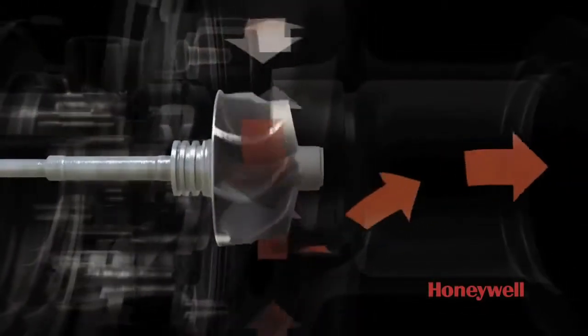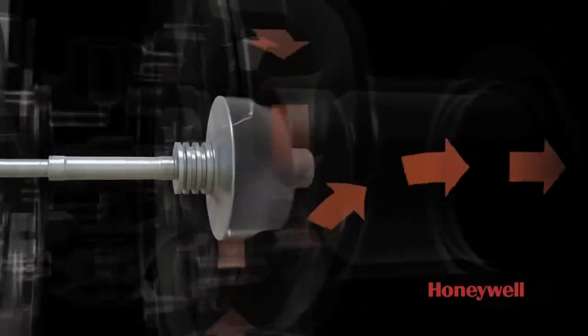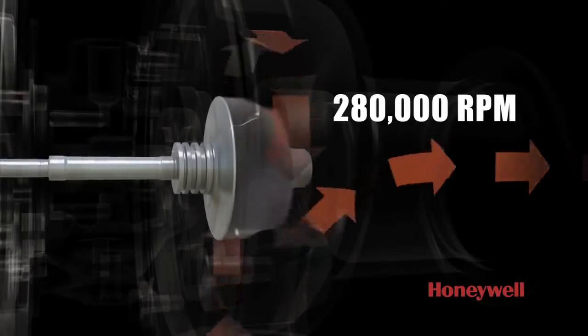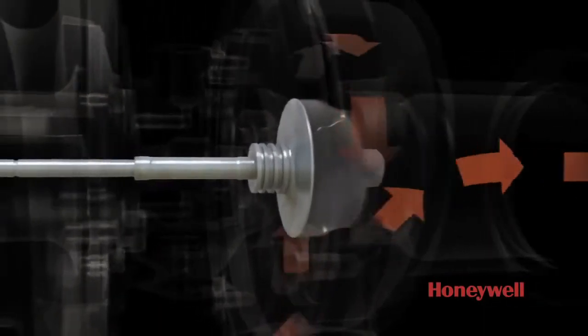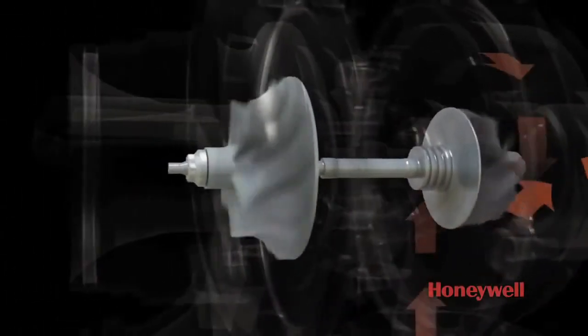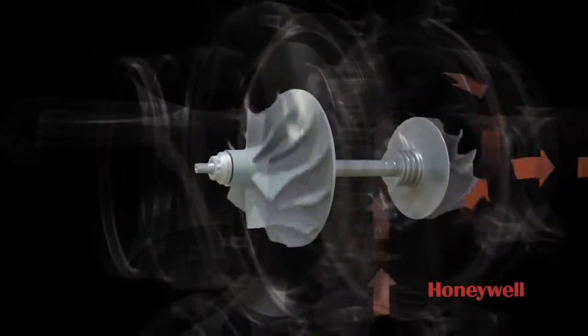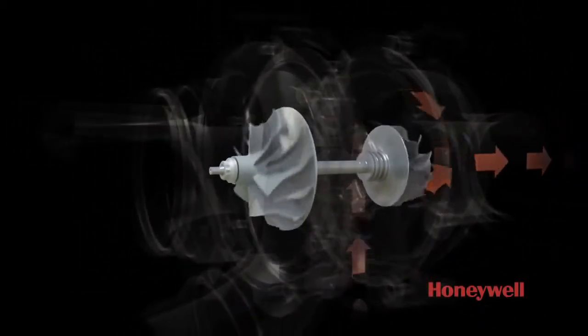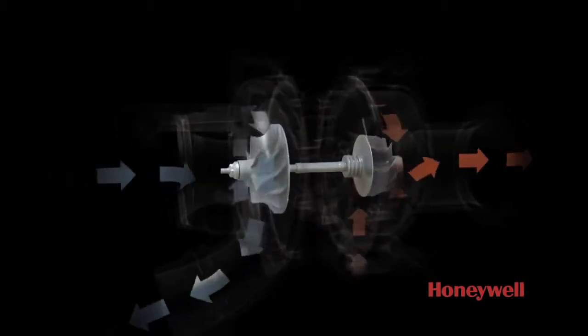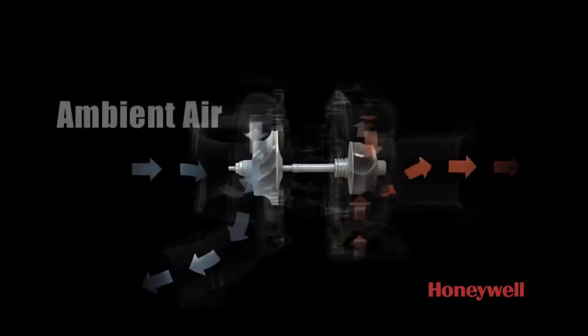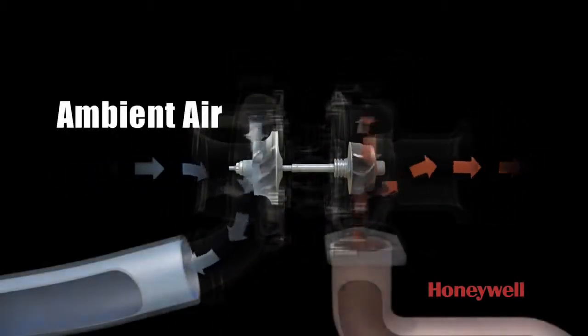This highly engineered wheel spins quite fast, reaching speeds of up to 280,000 RPM. On the other side of the turbine wheel, connected by a shaft, is a compressor wheel. These two wheels turn together, and the rapid spinning allows the compressor to suck in large amounts of ambient air and compress it.